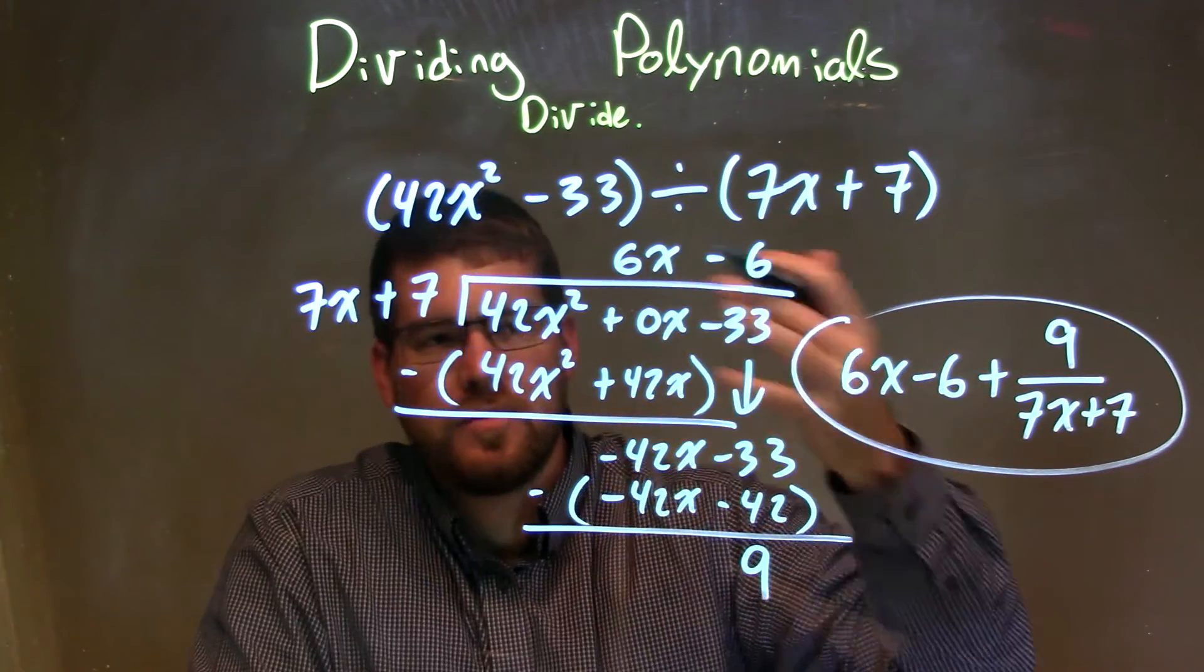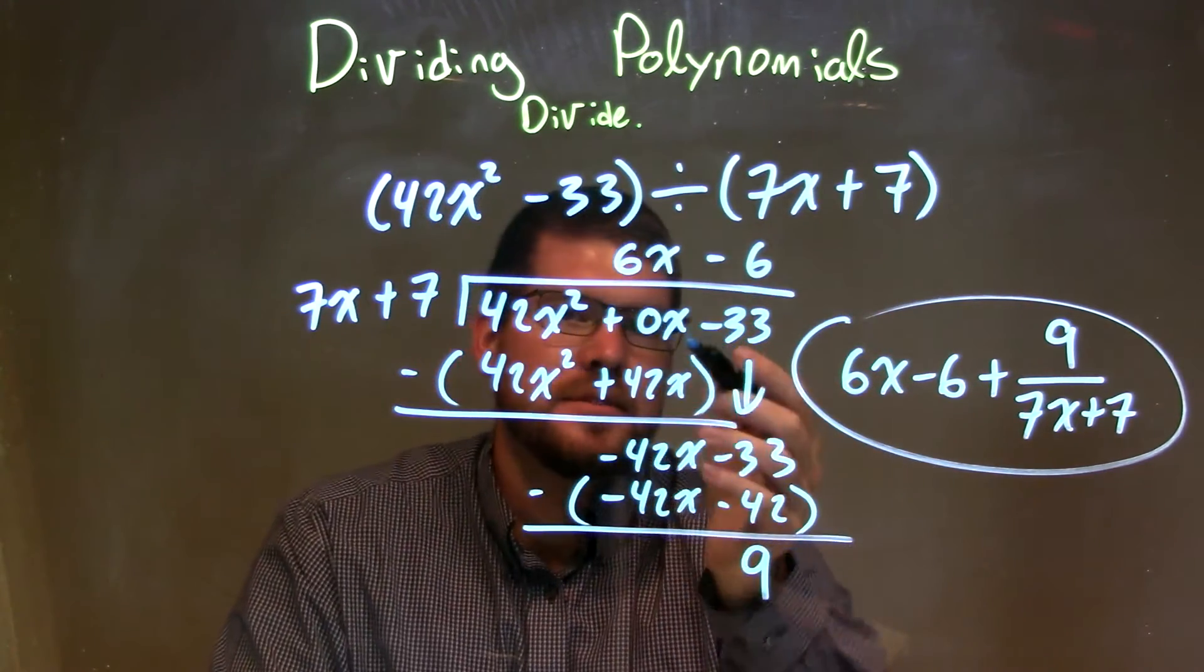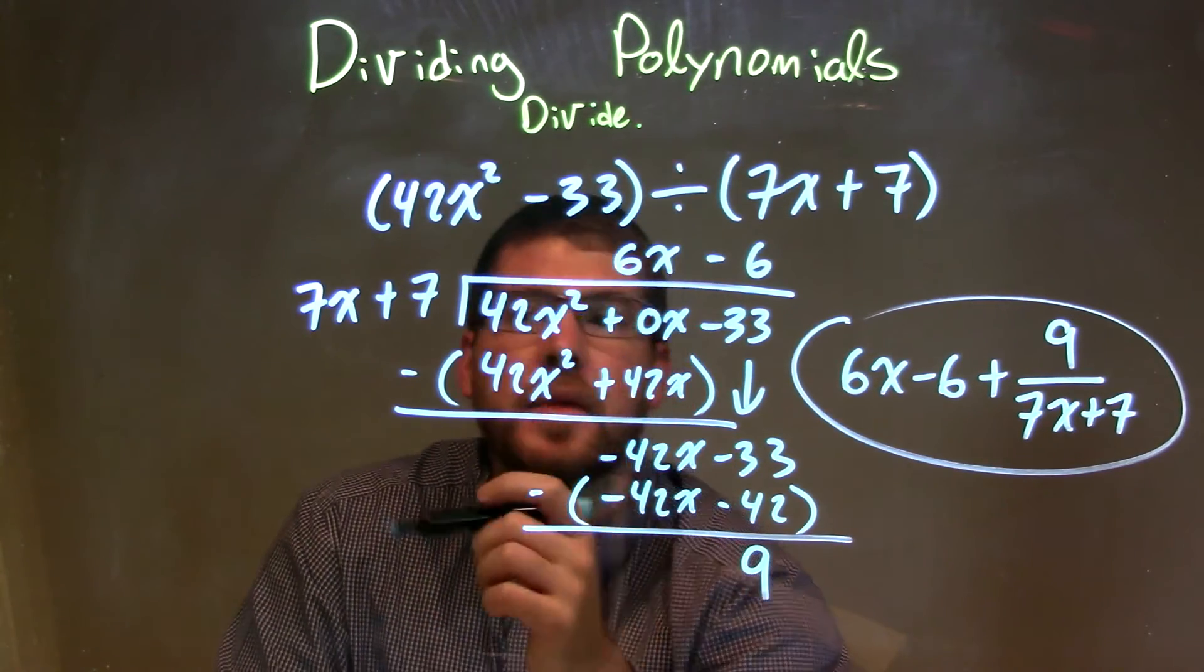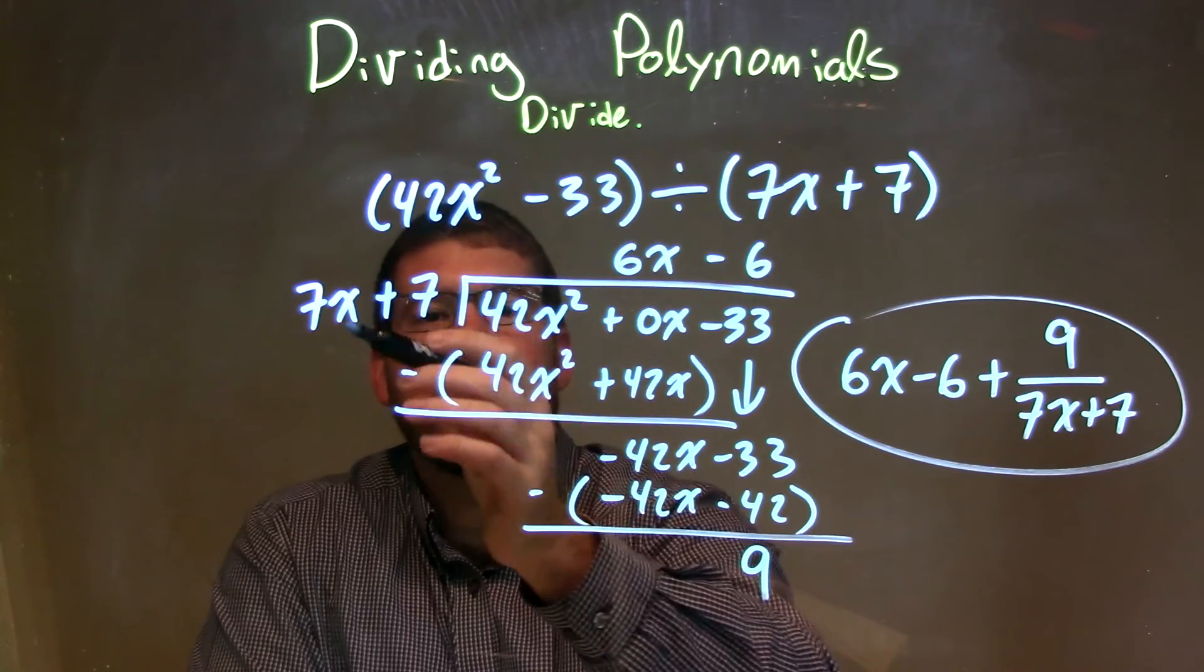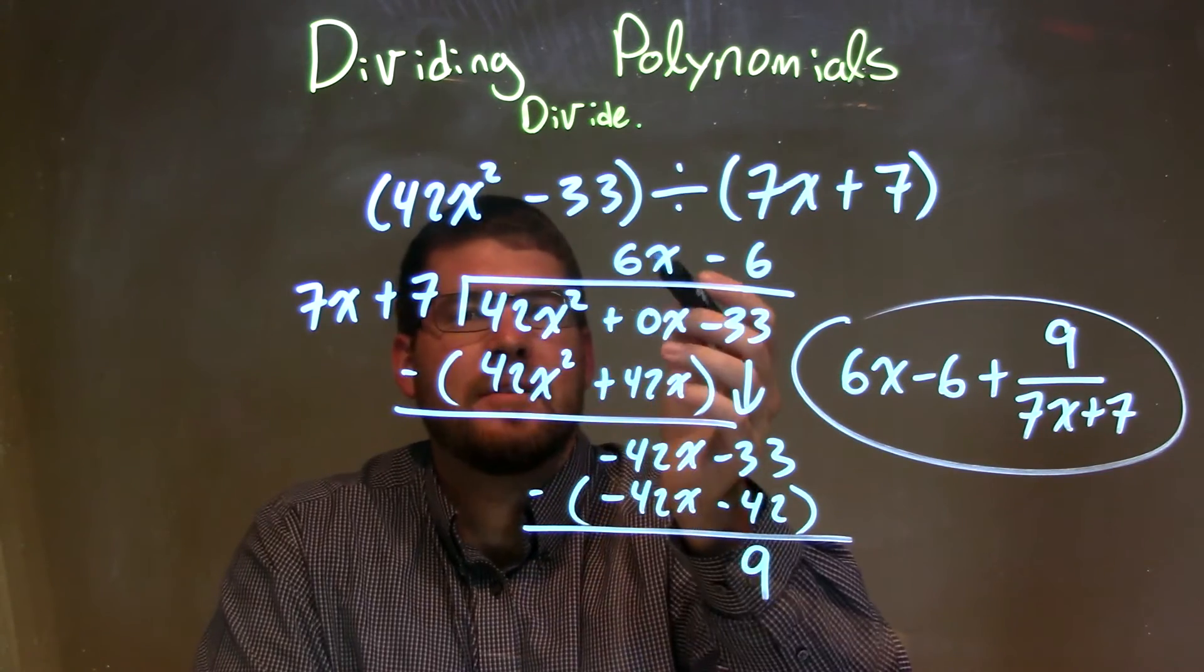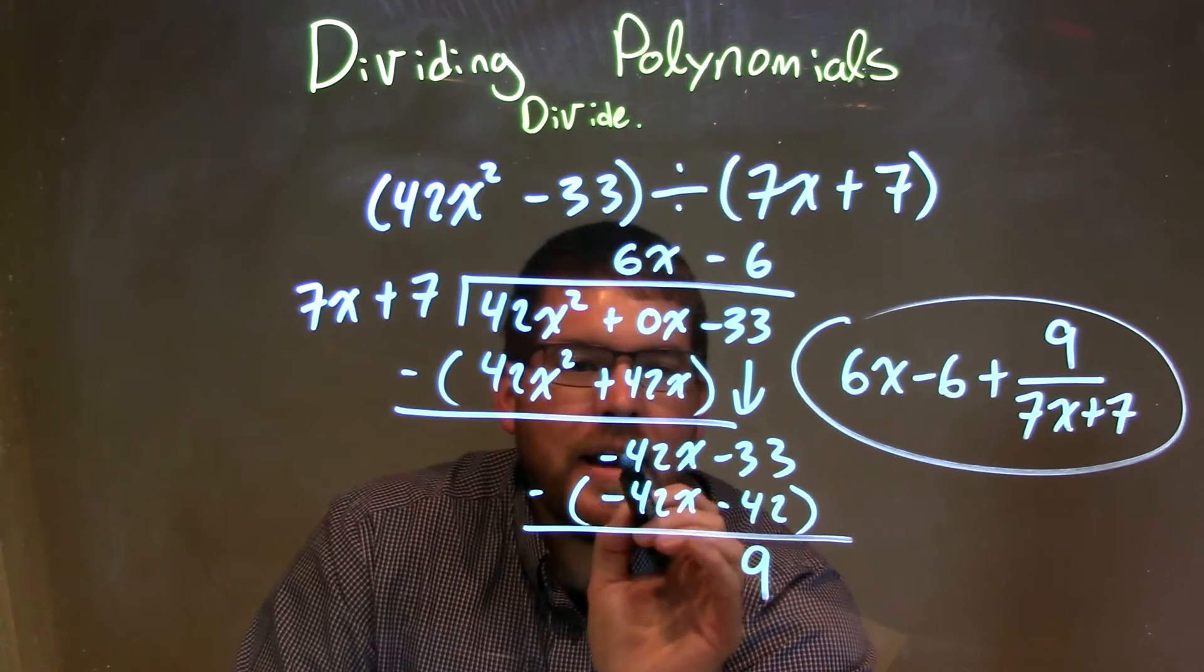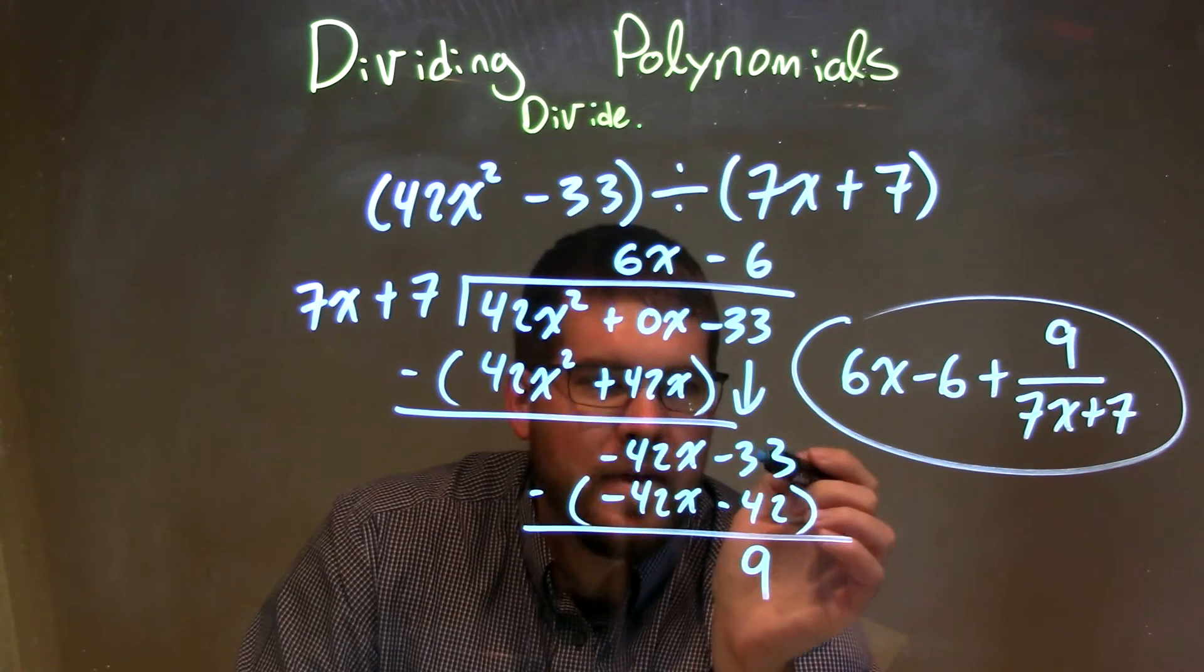But you can either leave a space, some people do, or you can put a value there of 0x. Because 0 times x is just 0. We said, what times 7x gives me 42x squared? That's 6x. So I multiplied both parts here, then I subtracted them, giving me a negative 42x left here, and I brought down a minus 33.